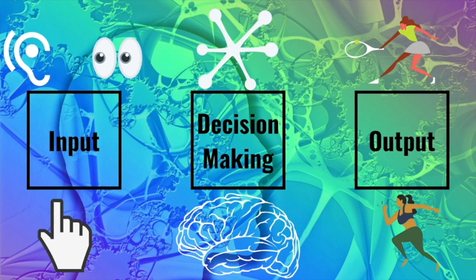The key takeaway for the exam: if the question asks for a simple model, think about this input–decision–output process. If it asks for something more detailed, you're more than likely going to be talking about 5.2.2 and Welford's model.